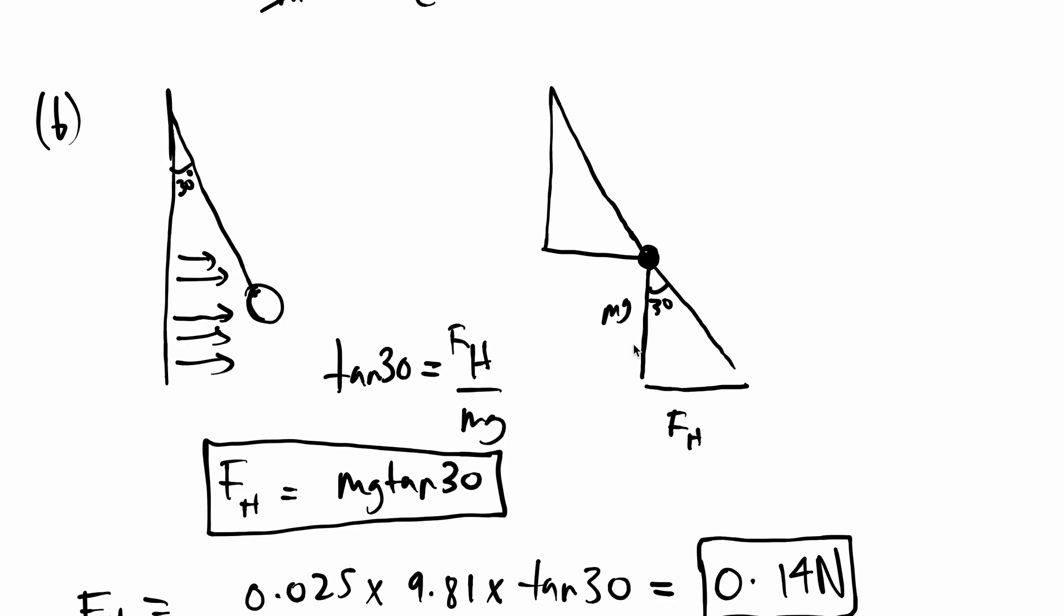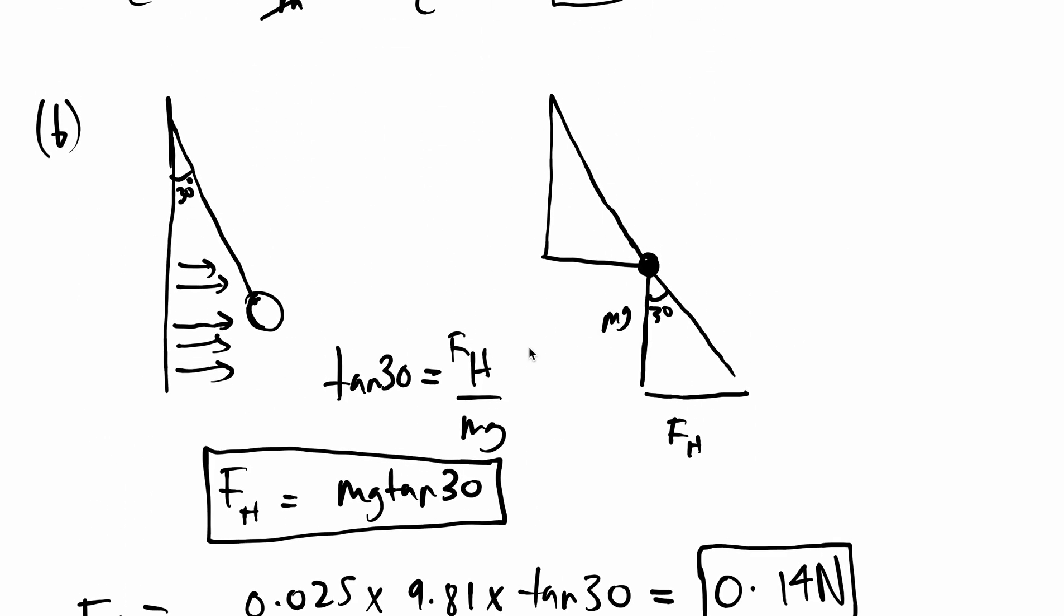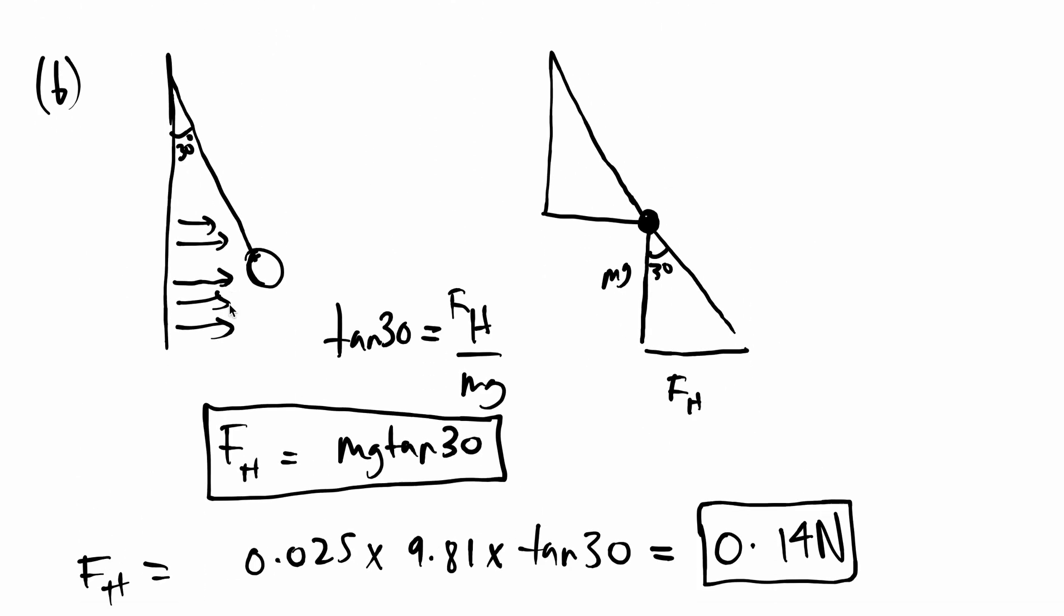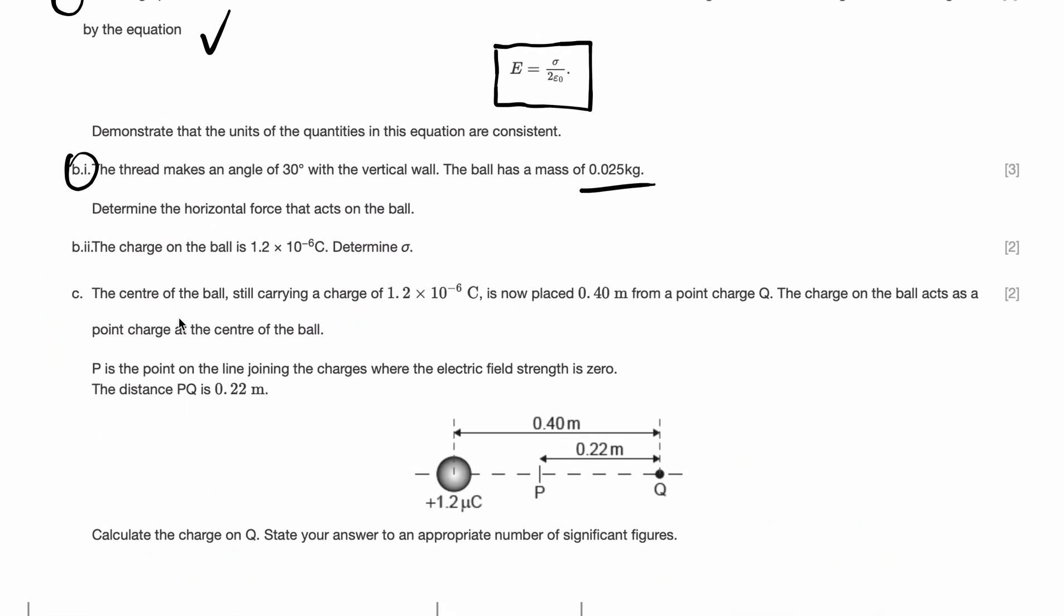That is the horizontal force acting on the ball, FH. And just to recap how we solved it, we just used our right angle properties and trigonometric ratio of tan 30. We separated the ball into its components: the tension component, the weight component, the horizontal force component. And using what we know, we just created an equation and solved it. Part B2 is done.